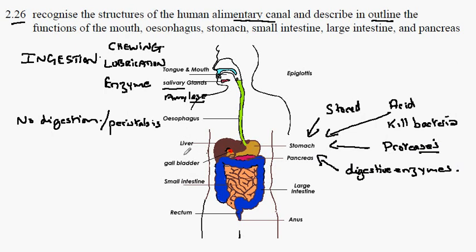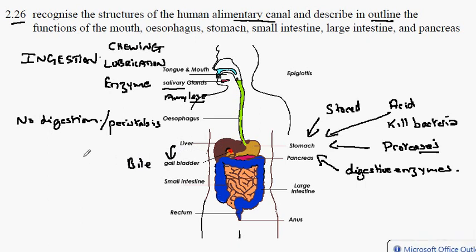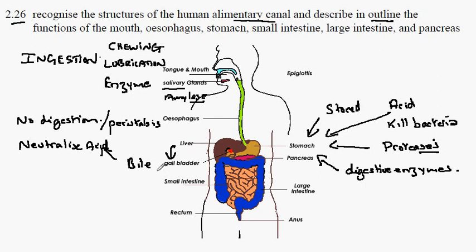The liver has a structure that manufactures bile, and the bile is stored in the gallbladder, shown here in red. Bile has a number of effects, including neutralizing the stomach acid so that the pH conditions in the small intestine are approximately 7. Another function of bile is to break the fat in our diet into small droplets — this is called emulsification.